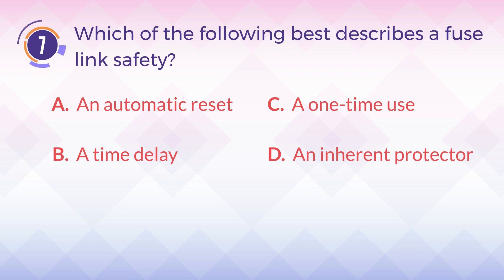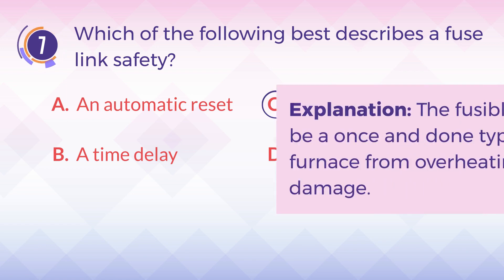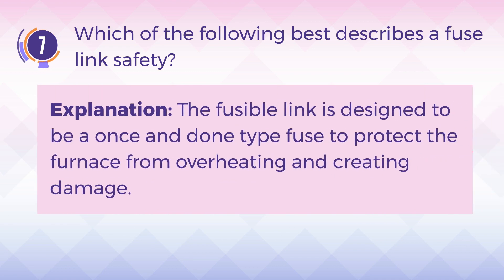The answer is C, a one-time use. Explanation: The fusible link is designed to be a once-and-done type fuse to protect the furnace from overheating and creating damage.